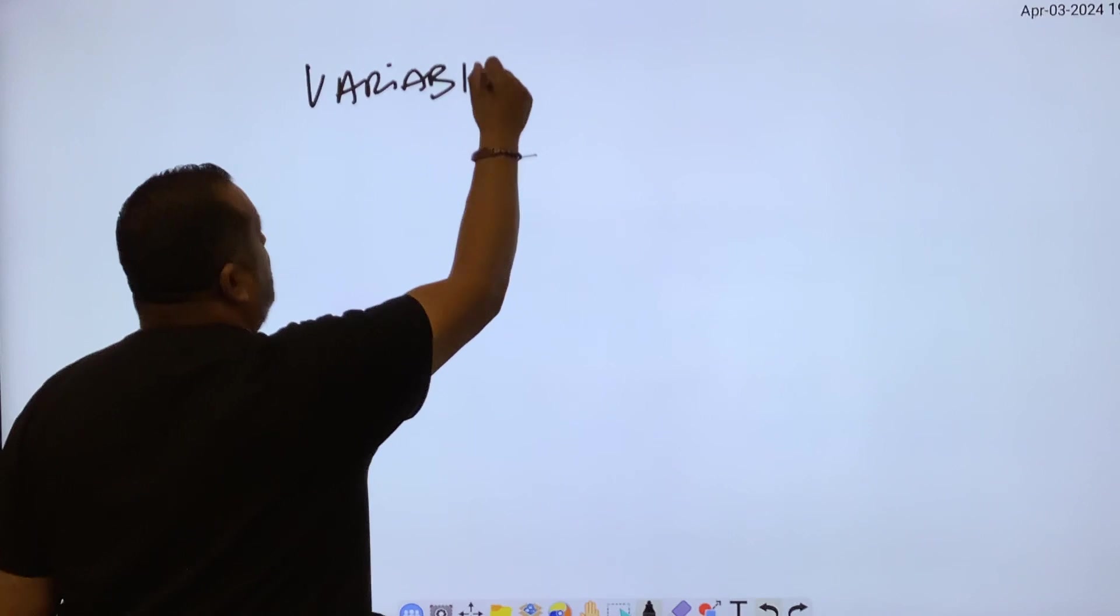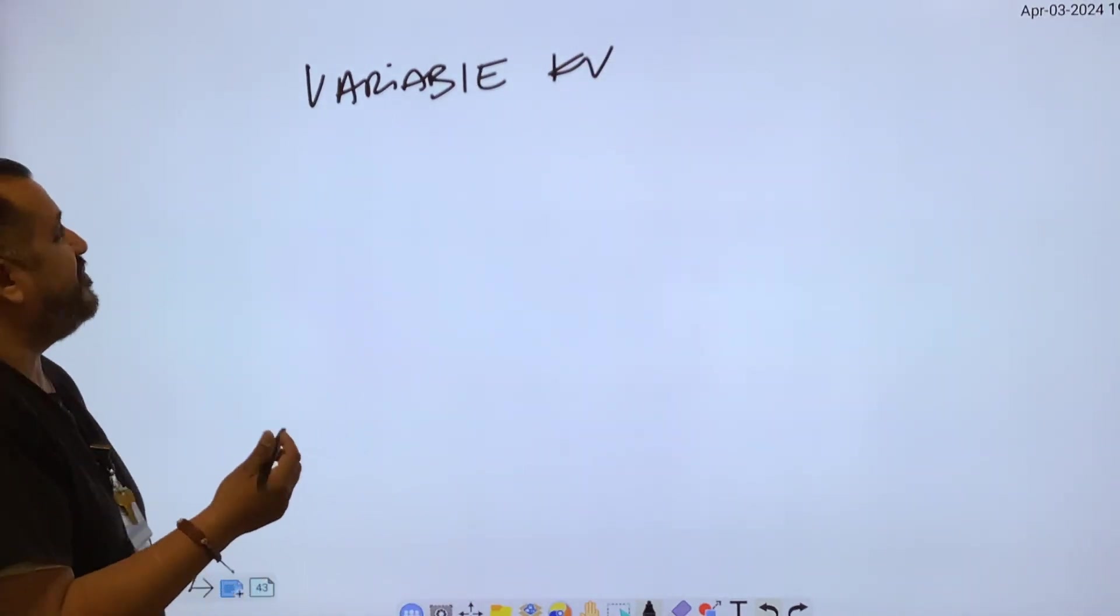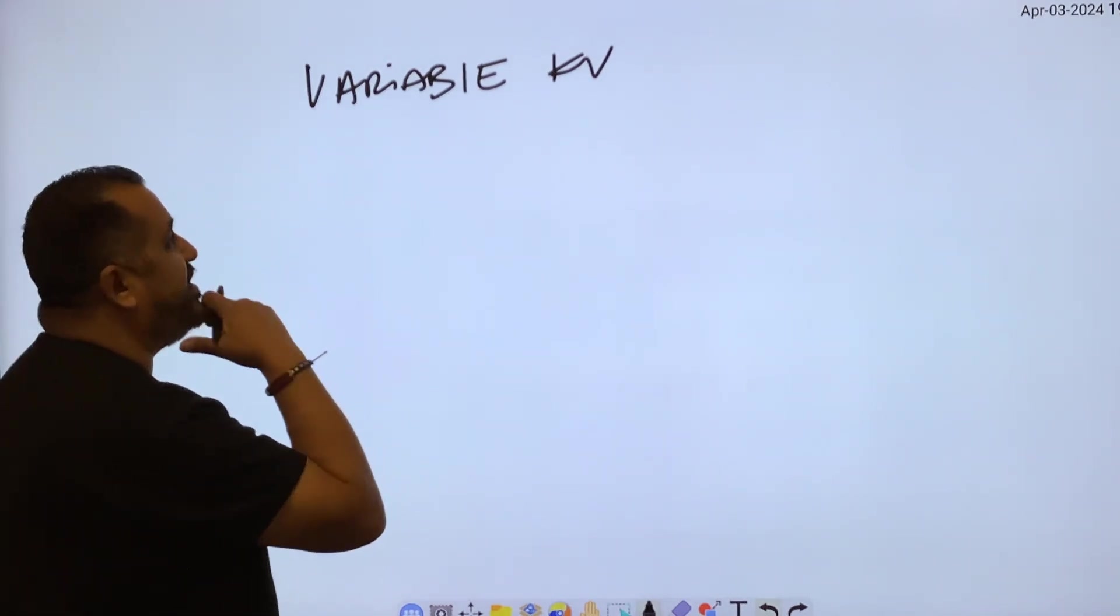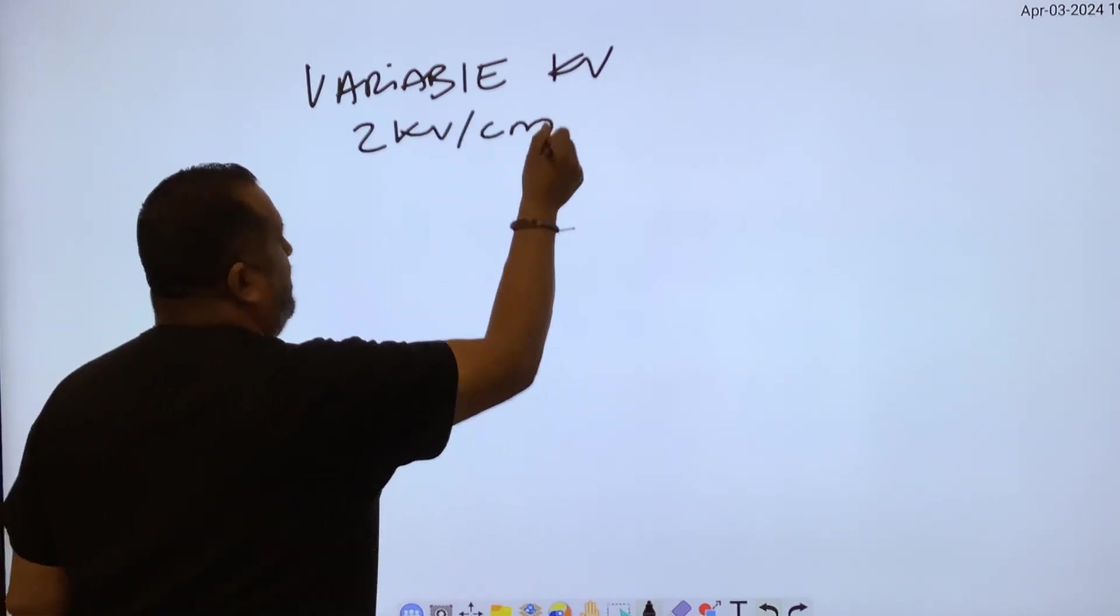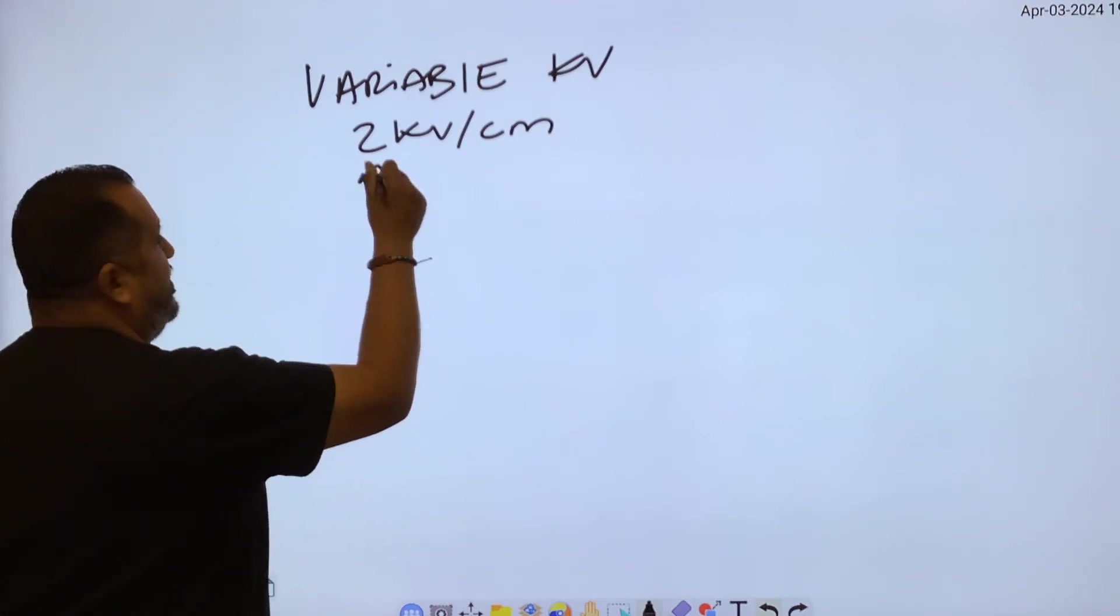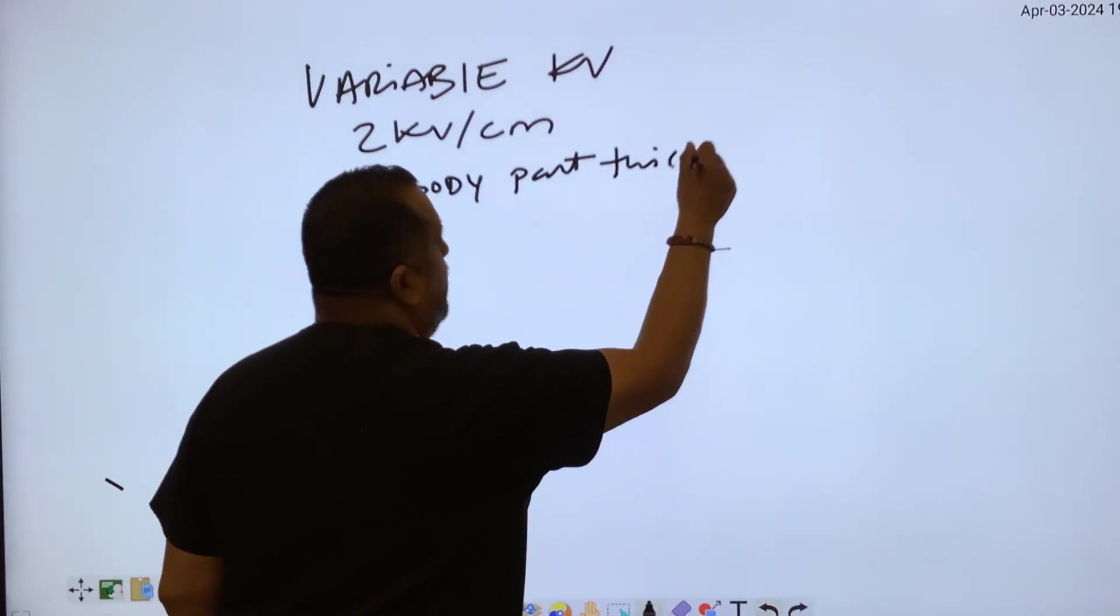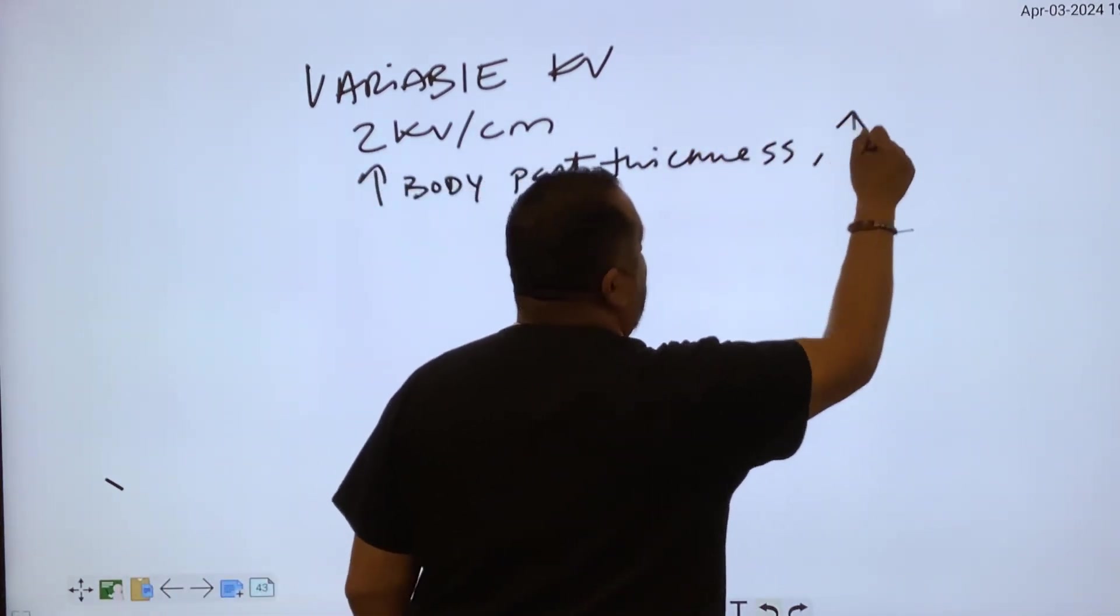Variable KV means exactly that - you're changing the KVP. So for variable KV technique charts, it's going to be two KV per centimeter of body part thickness. If you increase your body part thickness, obviously you're going to have to go up in technique. So in this case, we're going to go up in KV.